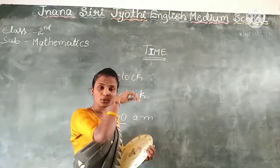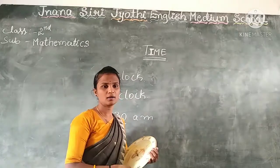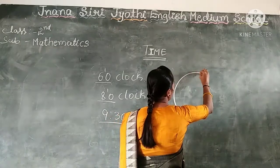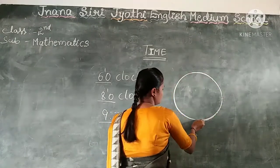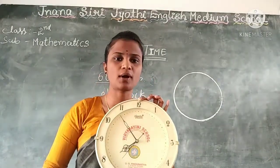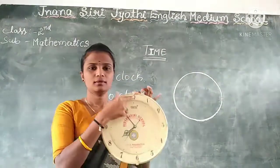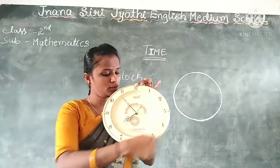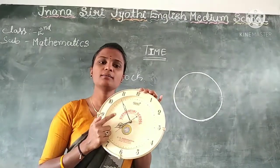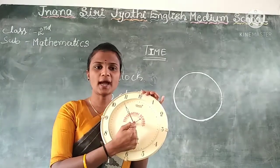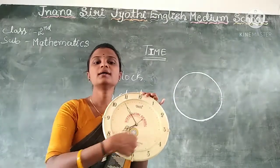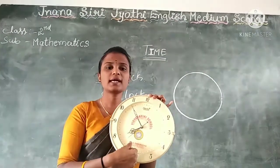Here, I will show you how to draw the clock. First, you draw a circle. The clock contains the numbers from 1 to 12. And there are 2 hands — one is a short hand and another one is a long hand. This is called the second hand.